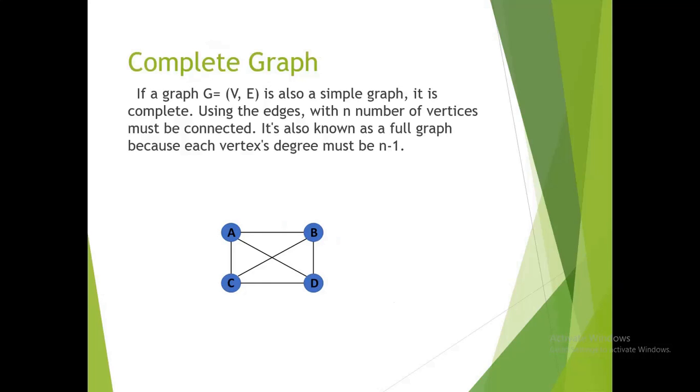Complete graph: if graph G = (V, E) is also a simple graph, it is complete. Using n edges with n number of vertices must be connected. It is also known as a full graph because each vertex degree must be n minus 1.